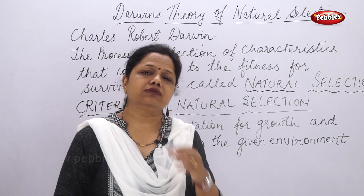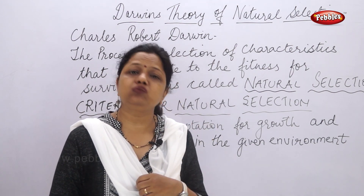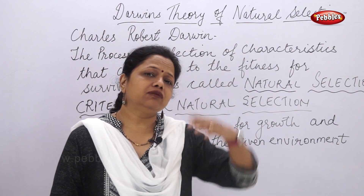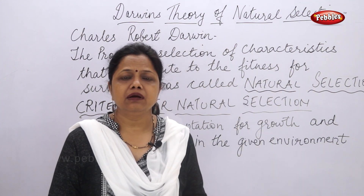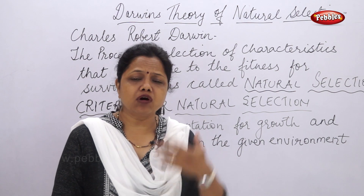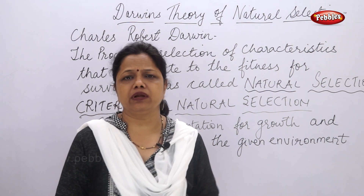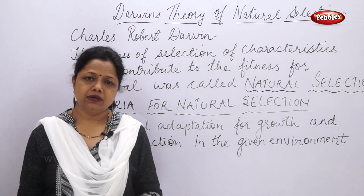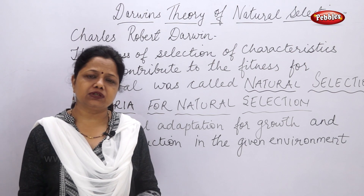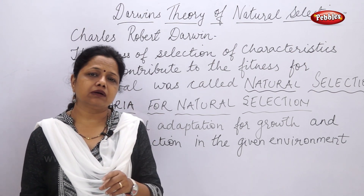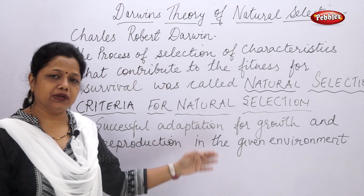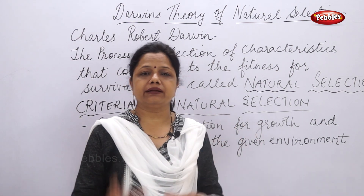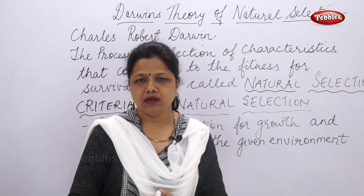Successful adaptation means adapting to the surrounding environment. For example, polar bears live in very cold climates and have developed big, long thick hairs on their body which protect them from the cold. This is one type of adaptation, and this adaptation is important for their growth. So successful adaptation for growth and then reproduction is actually the criteria for natural selection in any environment.